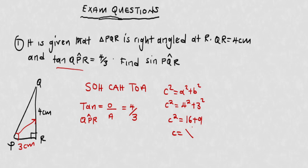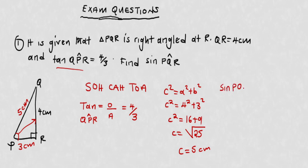Now we're going to write an expression for sin PQR, since the question asks us to find sin PQR. We've found the hypotenuse is 5 centimeters, which goes on that side of the triangle.